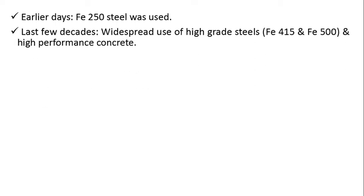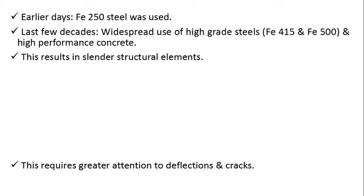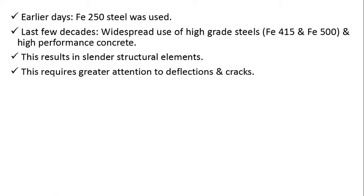We know that in earlier days Fe 250 steel was used, but in last few decades due to widespread use of high grade steels, that is Fe 415 and Fe 500, combined with use of high performance concrete, there are changes necessary in deflection as well, because this results in slender structural elements. When we are going for high performance concrete and high grade steel, the dimensions of structural members like beam and slab required will be very less, and so the members will become slender, that is thin.